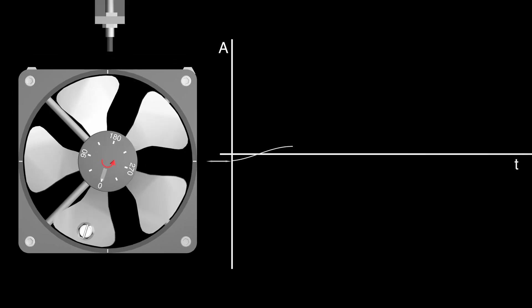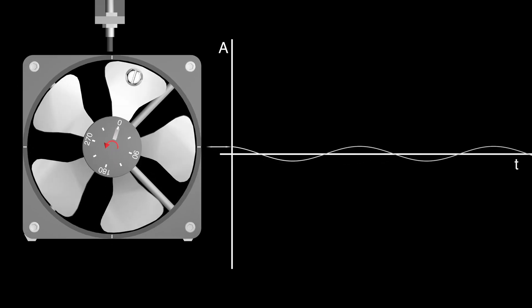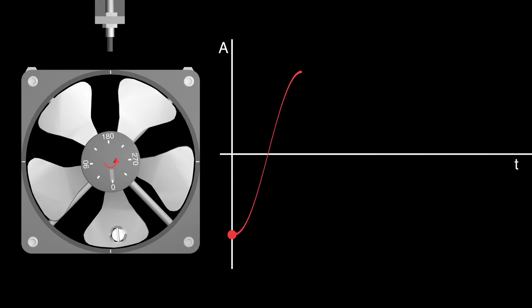Now look at the animation. We can see the rotating fan with heavy spot and its movement — its vibration. Next to the fan we draw the signal in time scale, like an oscilloscope screen. We can see the real movement amplitude, and now we amplify the movement to analyse it more easily.